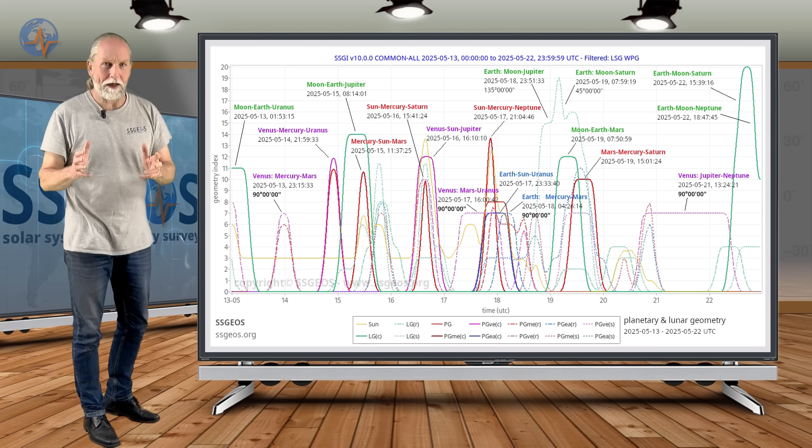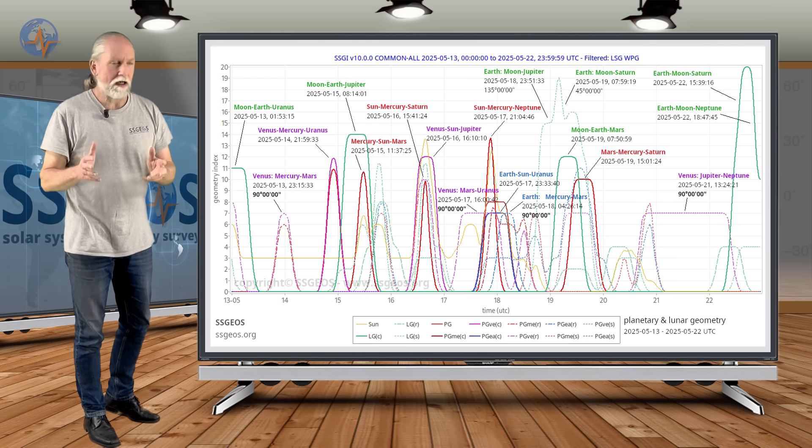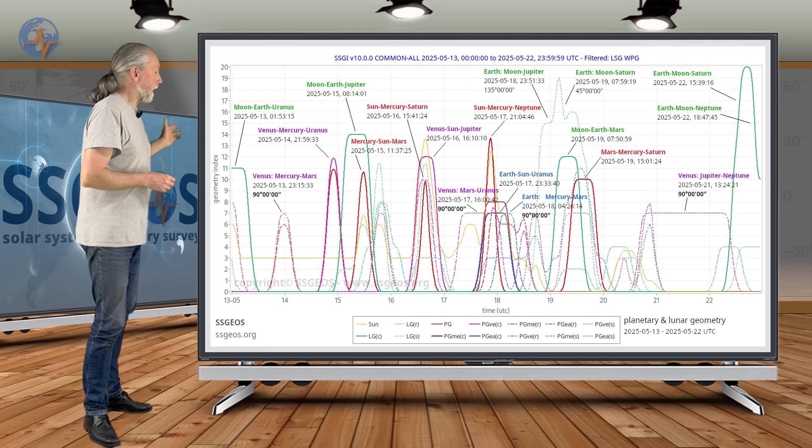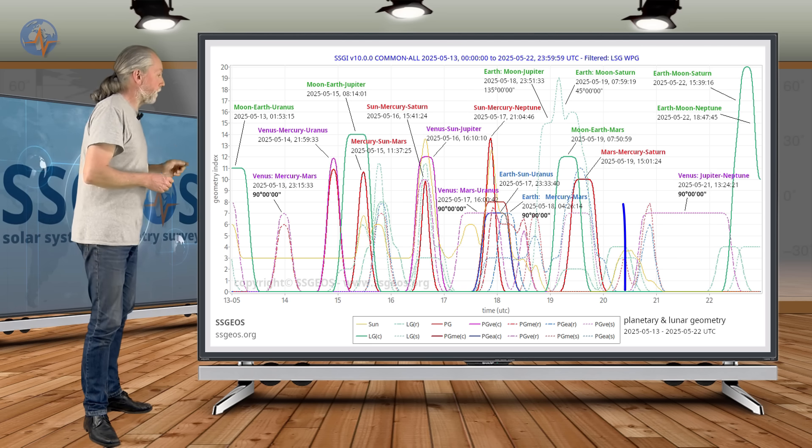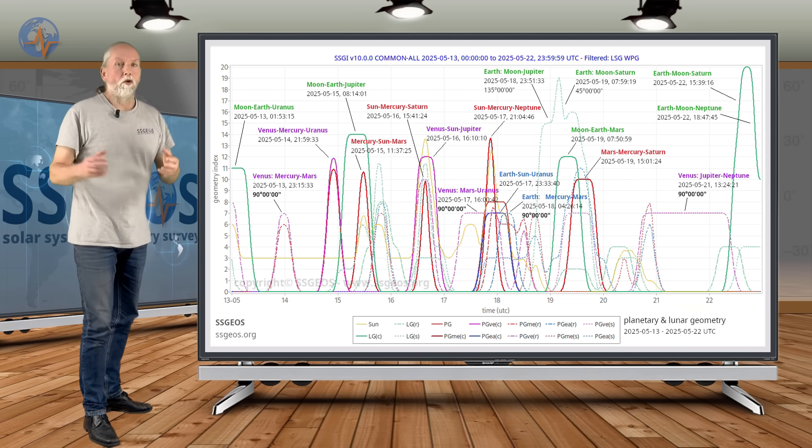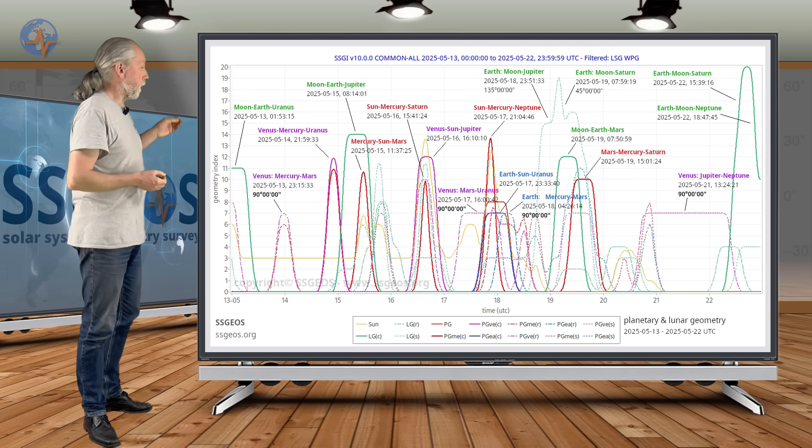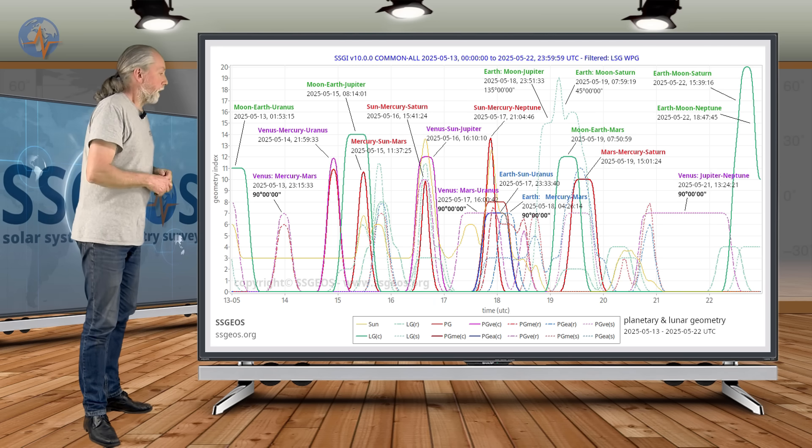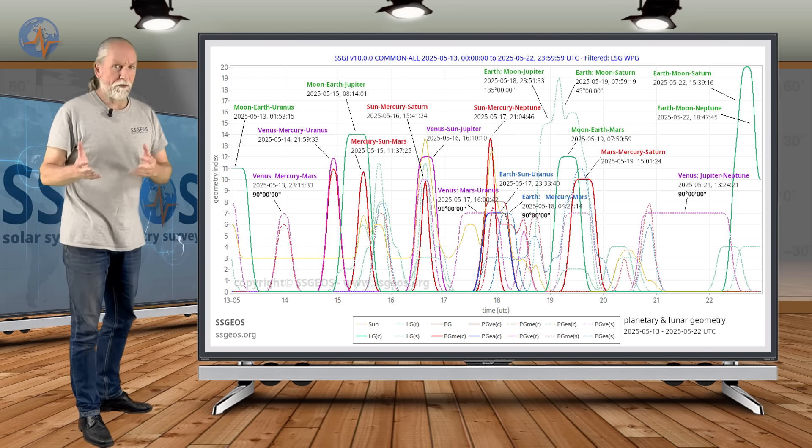So this planetary geometry can very well trigger very large seismic activity. Be on extra alert, have an earthquake plan that can be life-saving. Then we have another right angle with Venus, Jupiter, Neptune coming up later on the 21st, just before another convergence of lunar geometry with Saturn and Neptune. That could result in seismic response around the 23rd.